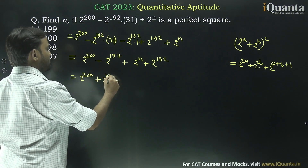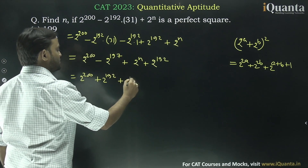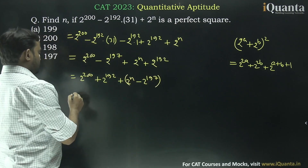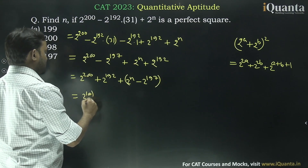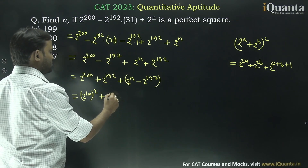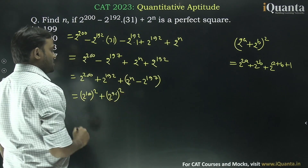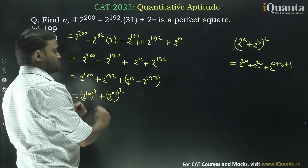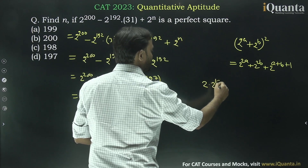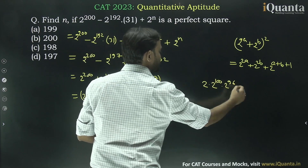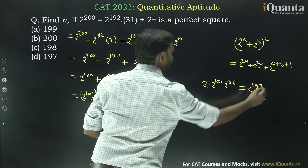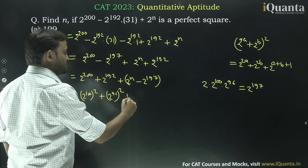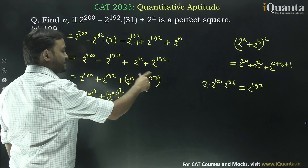We can rearrange this as 2 to the power 200 plus 2 to the power 192, and this will become 2 to the power n minus 2 to the power 197. Now this is nothing but (2 to the power 100) whole square plus (2 to the power 96) whole square. Now if there is a term here which is 2 into 2^100 into 2^96, this will be 2 to the power 197, then this will become a perfect square.